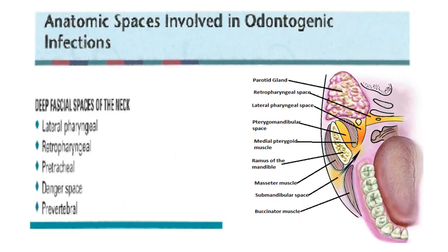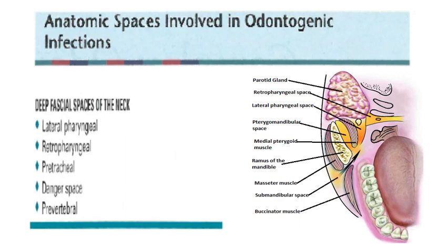Finally, the deep facial spaces of the neck include the lateral pharyngeal space — medial to the medial pterygoid and lateral to the lateral pharyngeal wall — as well as the retropharyngeal space, pretracheal space, danger space, and prevertebral space. All these spaces will be discussed in detail in a separate video dedicated to the spread of infection through facial spaces.